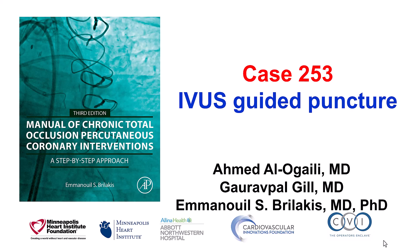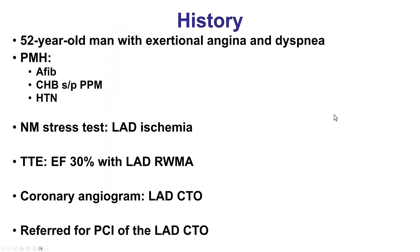Hi, this is Ahmed Alokaili, Gaurav Gil, and Manos Brilakis, presenting case 253 for the Manual of CTO Interventions. This is a case illustrating the use of intravascular ultrasound to resolve the proximal cap ambiguity in an LAD CTO. The patient presented with exertional angina and dyspnea due to an LAD CTO and was referred for PCI of that CTO.